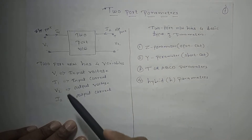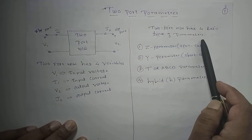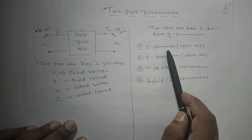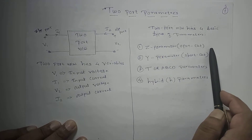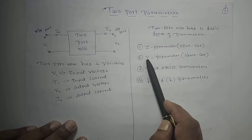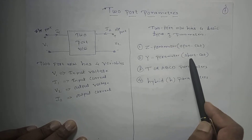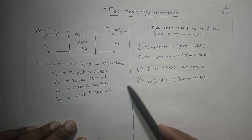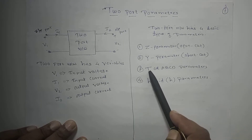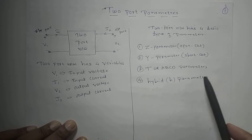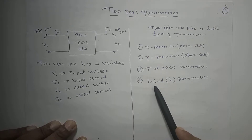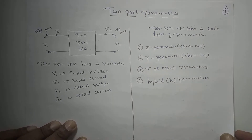This 2-port network has 4 basic types of parameters. Z parameter, or impedance parameter, is also called open circuit parameter. Y parameter is the admittance parameter, also called short circuit parameter. T parameter is the transmission parameter, also called ABCD parameters. The fourth one is the hybrid parameter, usually called H parameter. So any 2-port network has these 4 types of basic parameters.